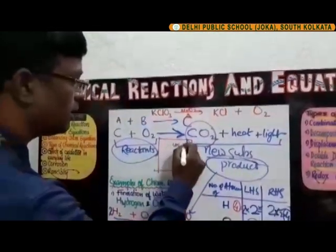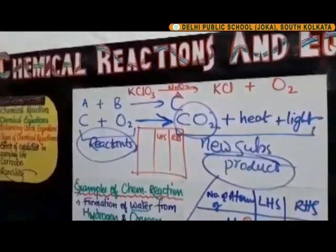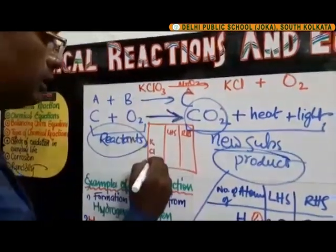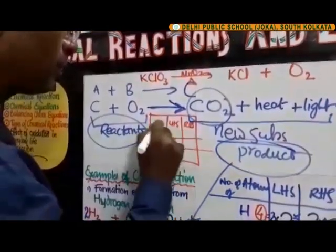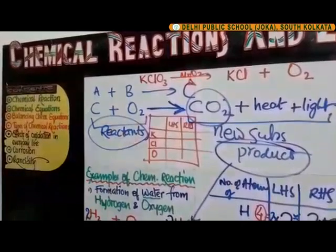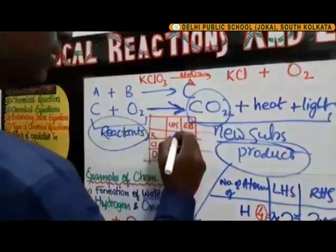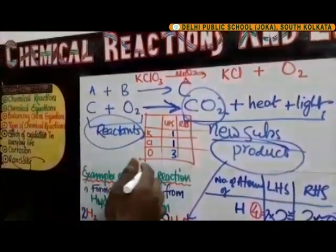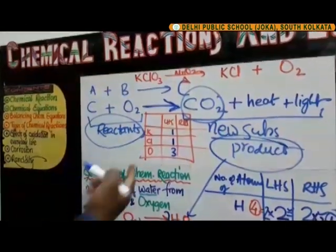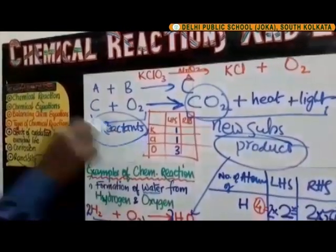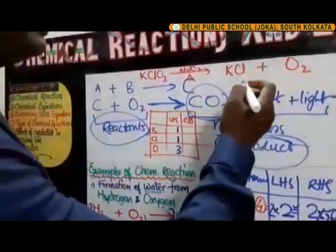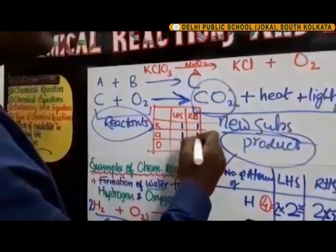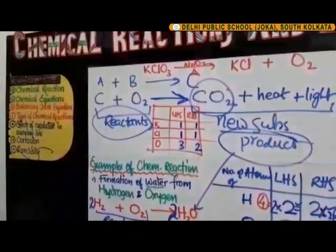We set up LHS and RHS columns for the elements K, Cl, and O. On the left-hand side initially: K is 1, Cl is 1, and oxygen is 3 — giving 5 total atoms. On the right-hand side: K is 1, Cl is 1, but oxygen is 2 — giving 4 total atoms. The two sides are not equal, so we need to make changes.